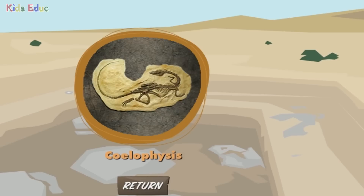Coelophysis. Wow, we got really lucky with this find. Come look at this. This is called Coelophysis — a small, very fast dinosaur that lived around 220 million years ago before they went extinct. Coelophysis had hollow bones in its legs, which made it a very fast runner.